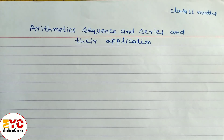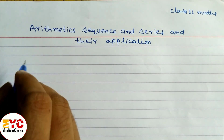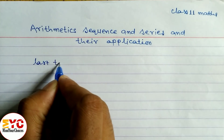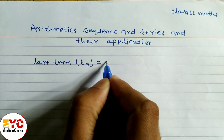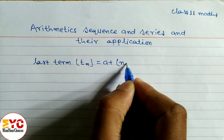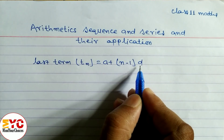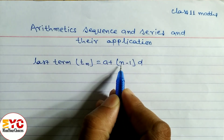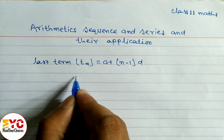Today we are going to learn arithmetic sequence and series. Before we start this exercise, first we have to learn the formula. The formula of the nth term, the last term, is: Tn = a + (n-1)d, where a is the first term, d is the common difference, and n is the number of terms.